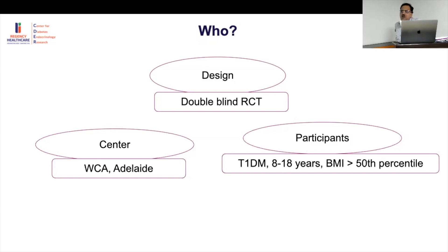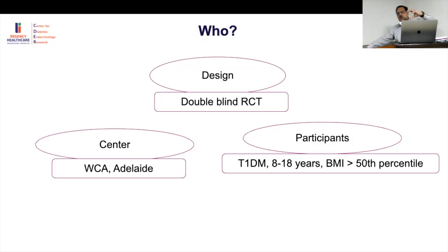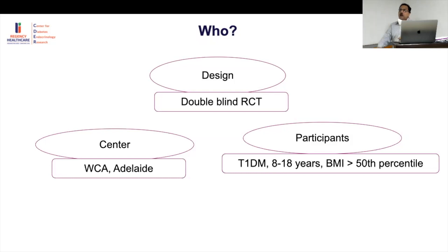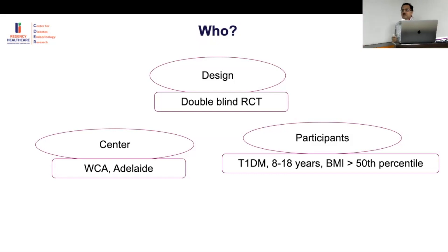Why BMI above the 50th percentile? They want to exclude lean children, in whom cardiac dysfunction risk is low. If you study a general population where cardiovascular risk is 10%, you'd need a much larger sample than in a high-risk population where risk is 60%. Enriching for higher BMI reduces the required sample size by potentially six-fold — a very smart design choice.